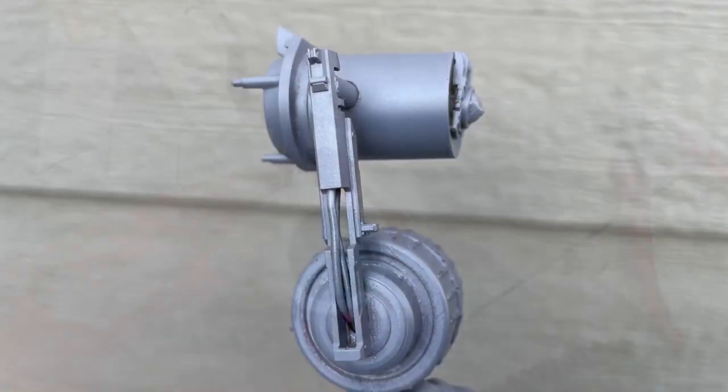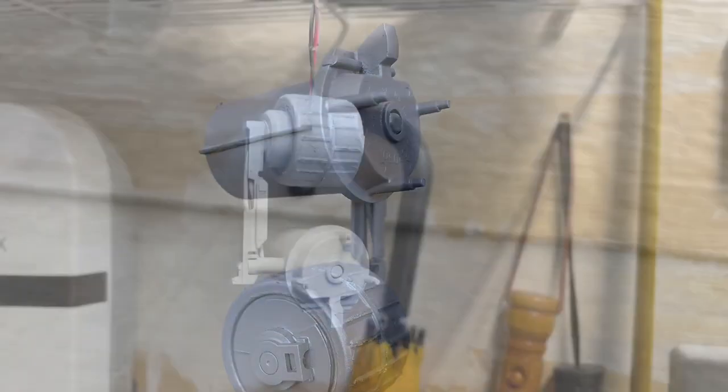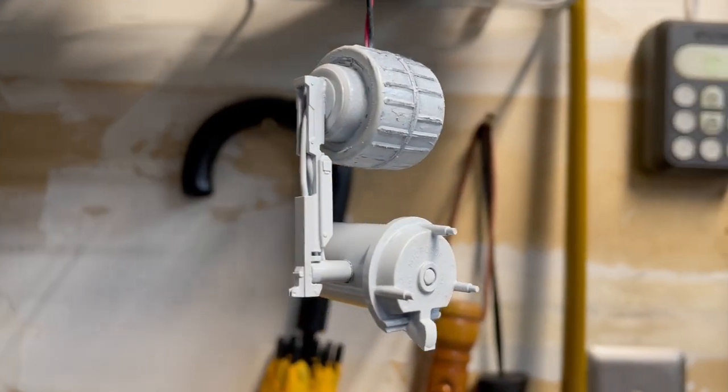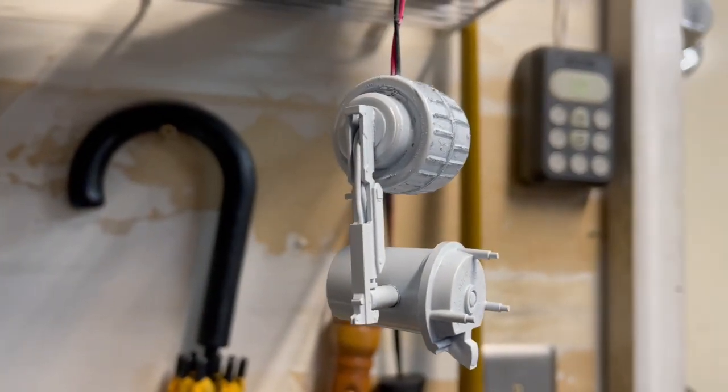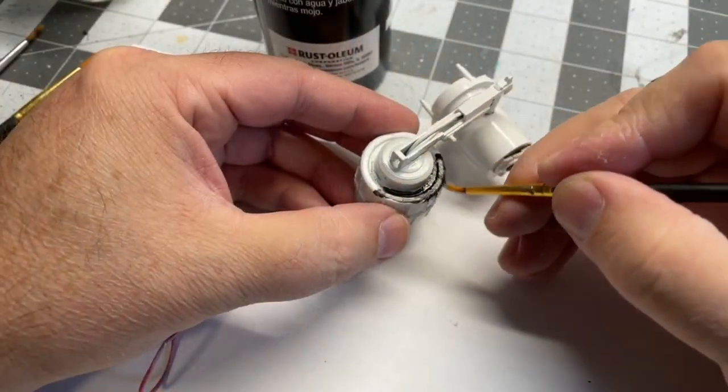So here's just a little shot of it primed up. I'm just using a gray Rust-Oleum primer and then nice gloss Rust-Oleum white. I hit it with a couple coats and then time to get into the detailing.